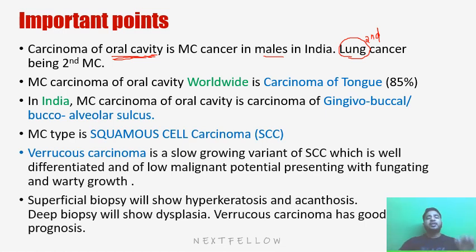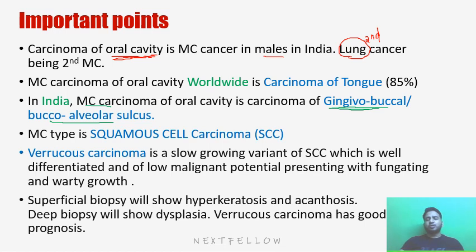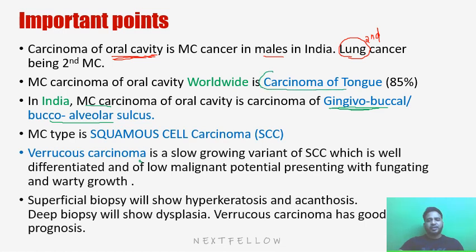And what is the most common site? In India, the most common site is gingivobuccal sulcus — or we can say buccal alveolar sulcus. Whereas in the rest of the world, the most common site is carcinoma of the tongue. So in India, the most common site is gingivobuccal sulcus, that is between the gingiva and the buccal mucosa.